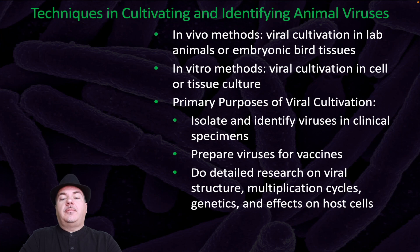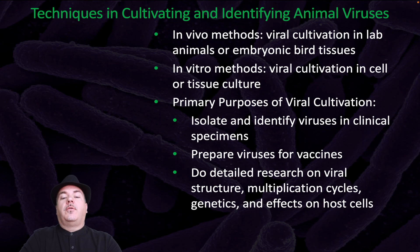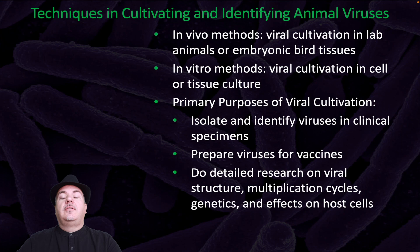If we're cultivating an animal virus, we can have in vivo methods — viral cultivation in lab animals or embryonic bird tissues — or in vitro methods, that's viral cultivation in cell or tissue culture. The primary purposes of viral cultivation are to isolate and identify viruses in clinical specimens, prepare viruses for vaccines, and do detailed research on viral structure, multiplication of cycles, genetics, and effects on host cells.